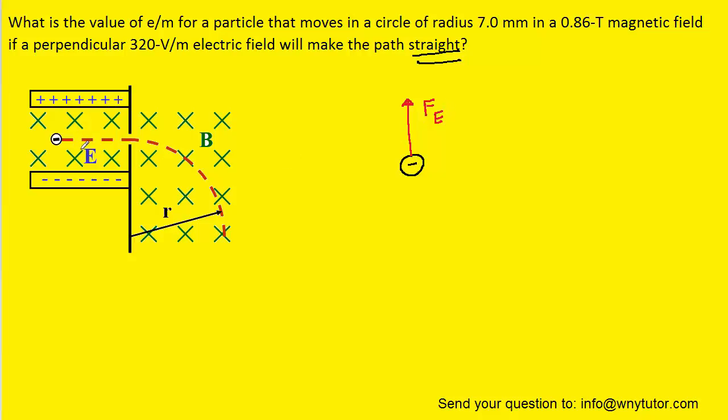But we'll also notice that there are these green Xs present between the two plates, and those Xs represent a magnetic field that is pointing into the page. And because of the presence of that magnetic field, there must be a magnetic force acting on this negative electron.